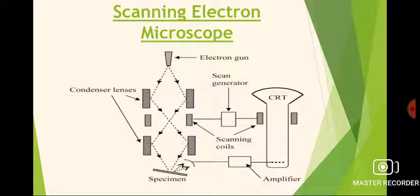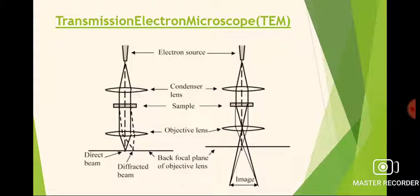Let us move towards the next type, the transmission electron microscope, known as TEM, that is shown in this figure. The figure shows electron source, condenser lenses, sample, objective lenses, and the back focal plane of objective lens.